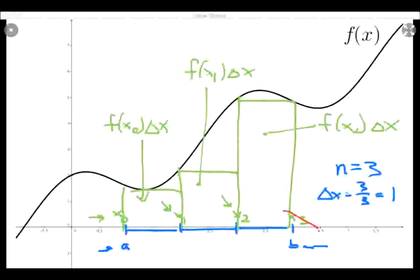Notice x sub n is not a left endpoint, and so it is left out. The resulting area estimates the distance traveled, and this sum is called the left Riemann sum, denoted L sub n, because we used n subdivisions, and chose the left endpoints.